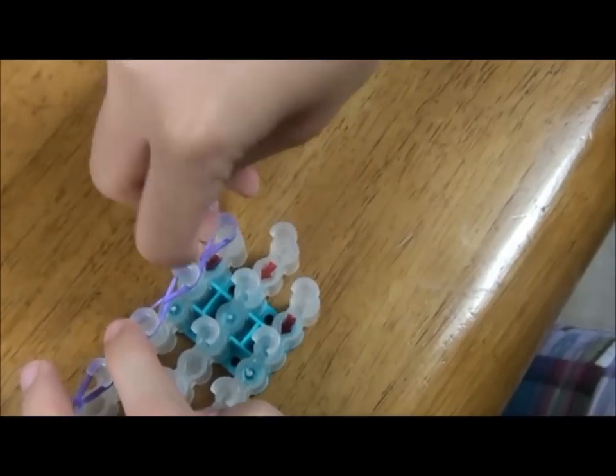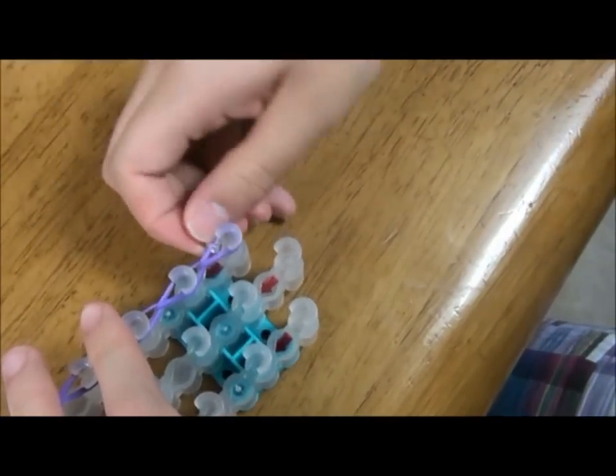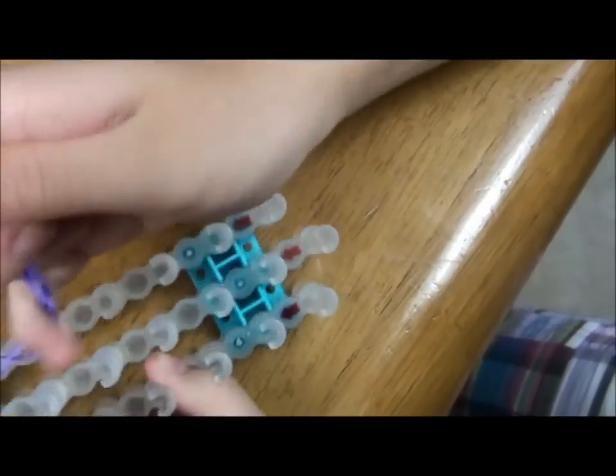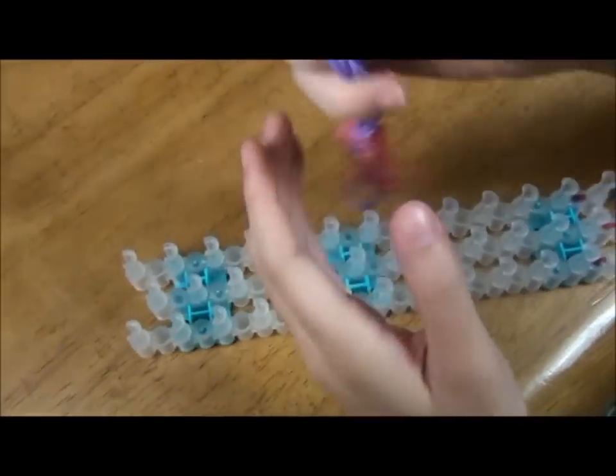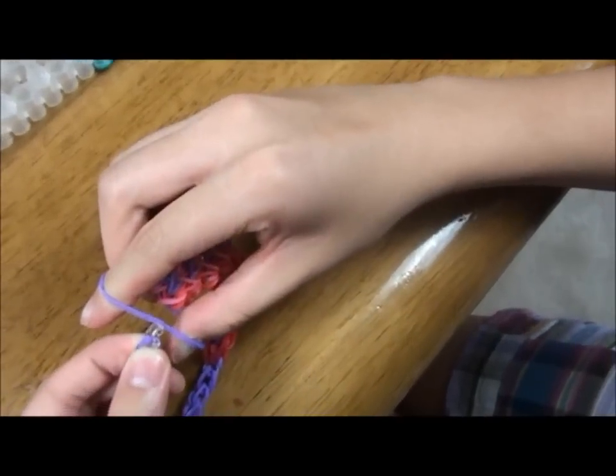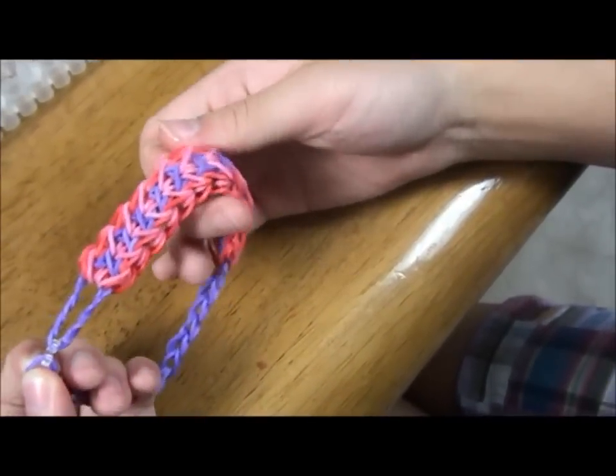Put the C-clip in the last rubber band, then pull it out. Join the other end so it looks like this.